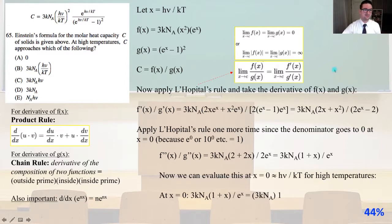Number 65. This is a fun one. Einstein's formula for the molecular heat capacity C of solids is given above. At high temperatures, C approaches which of the following? Let x equal hν/(kT) where F(x) equals 3kₙA times the quantity x²e^x. G(x) equals (e^x - 1)². And C can equal F(x) over G(x).